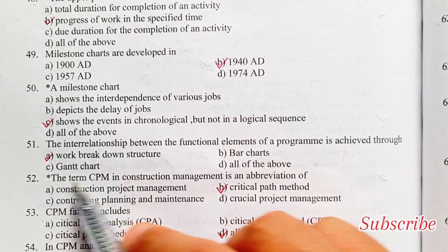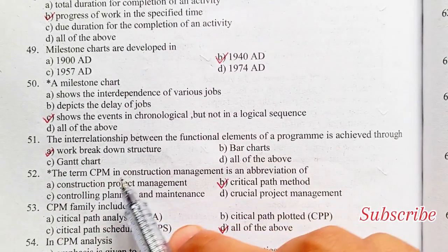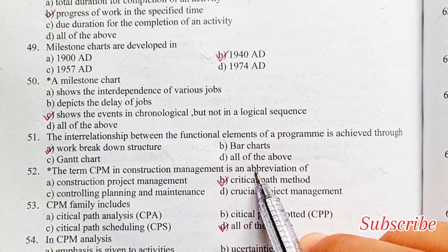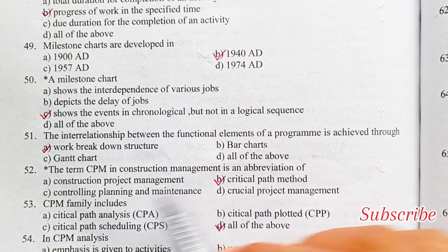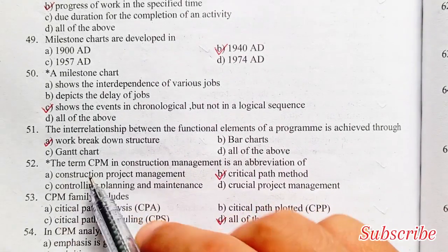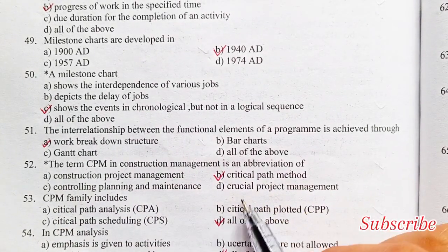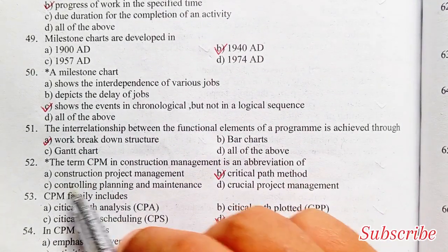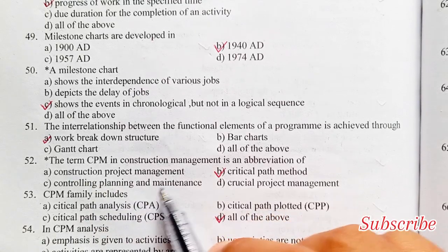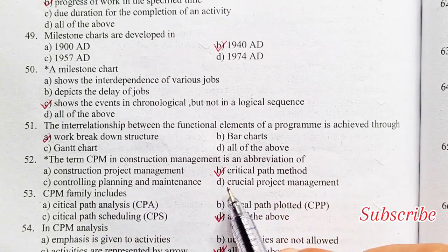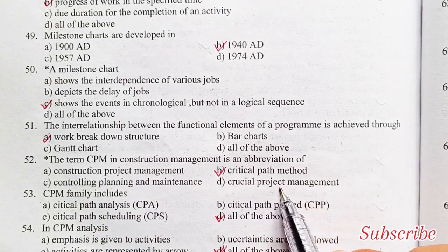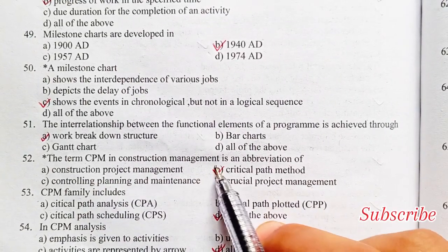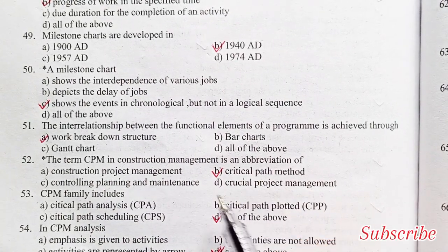The term CPM in construction management stands for: critical path method, controlling planning maintenance, or critical path. Option A is the right answer — critical path method.